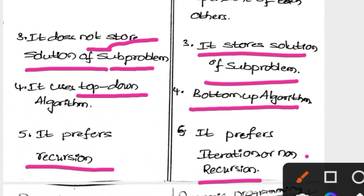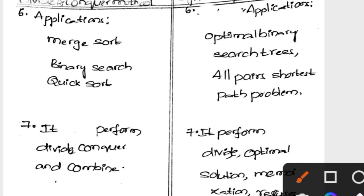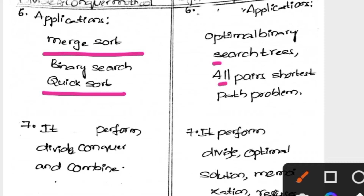The applications of Divide and Conquer include Merge Sort, Binary Search, and Quick Sort. Whereas in Dynamic Programming, the applications include Optimal Binary Search Tree, All Pairs Shortest Path problem, and Multi-stage problem.